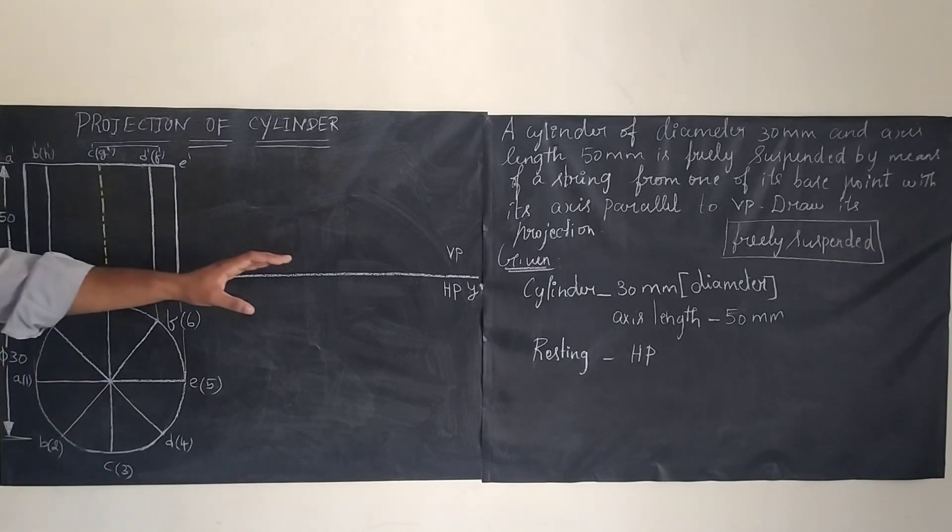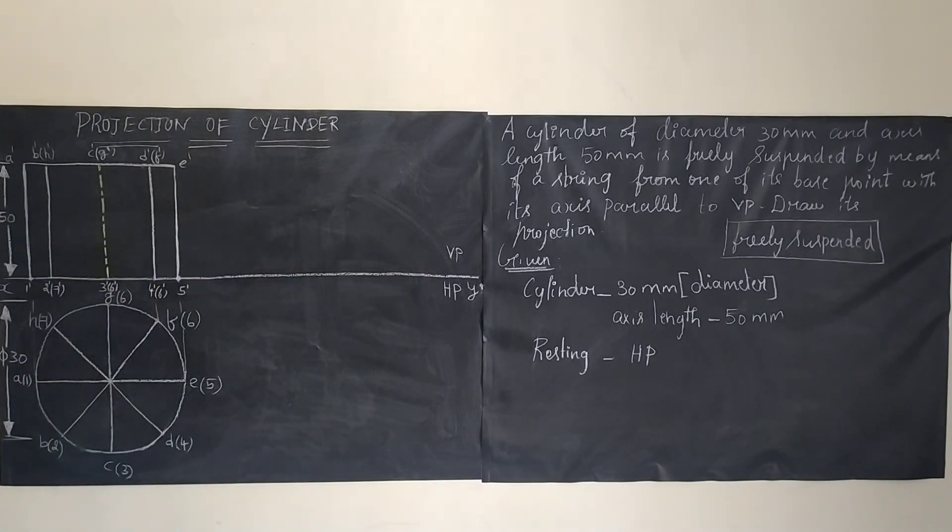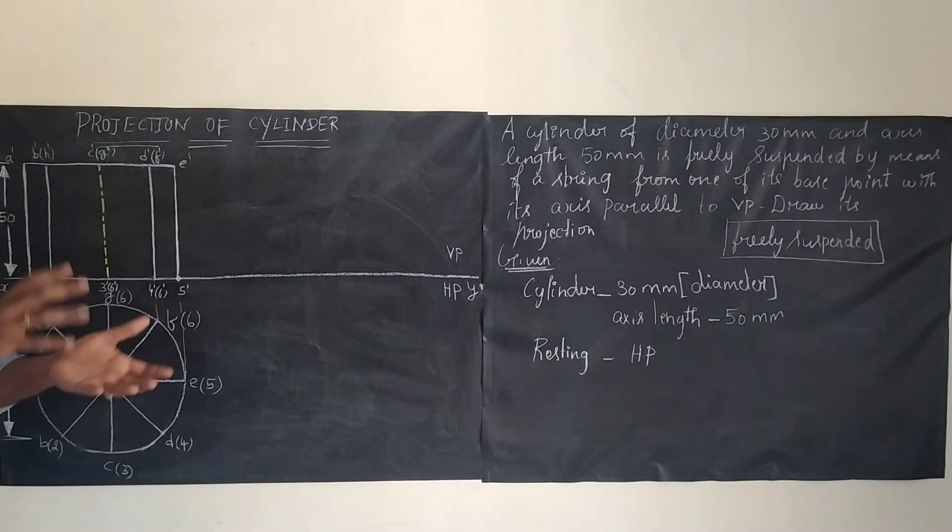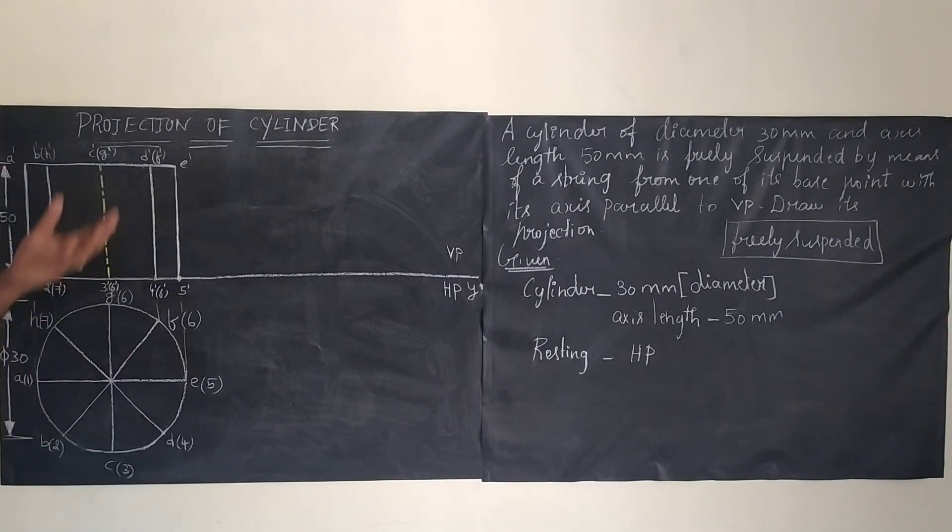First of all, we need to draw a reference line and name it as XY. Vertical length will be above and horizontal length will be below. As we know, we need to draw the circle in HP. We can see the true shape of the cylinder only in the top view. When we see from the top, we can clearly see the circle. So just draw the circle on HP. Diameter is 30 mm, radius will be 15 mm. Take your compass radius of 15 mm, keep the center here and just draw the circle.